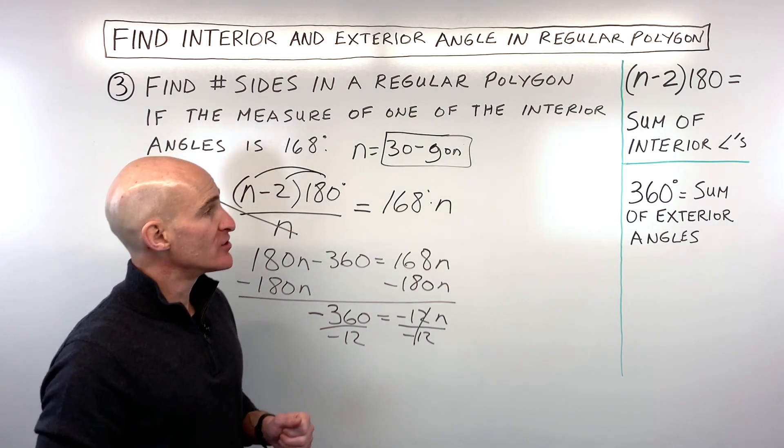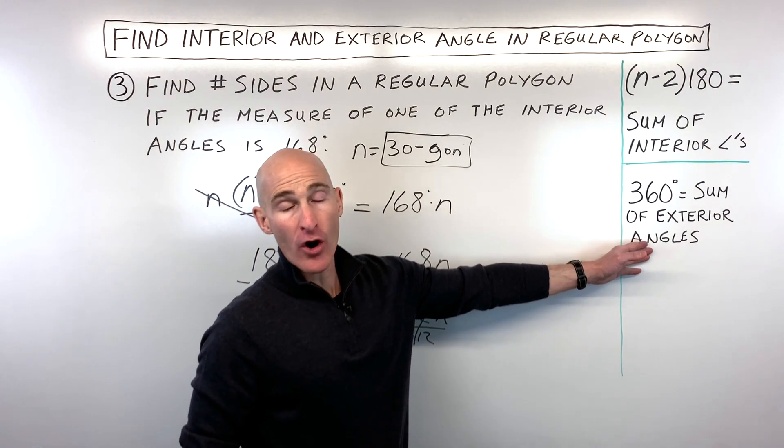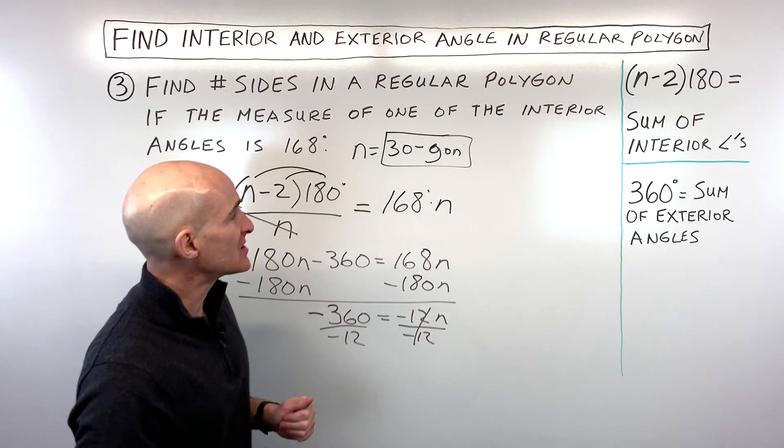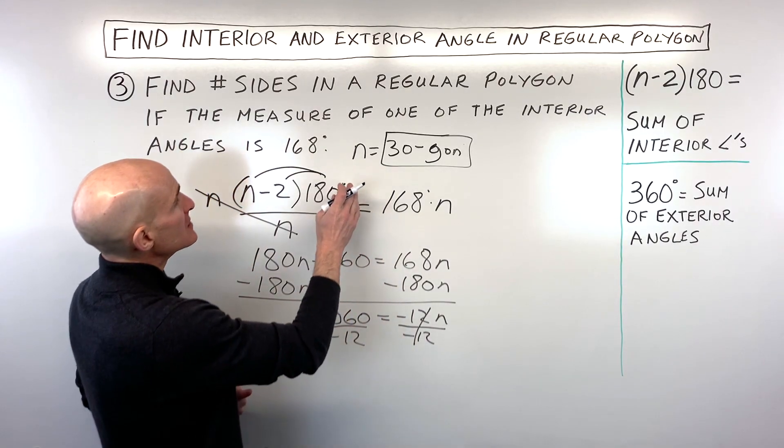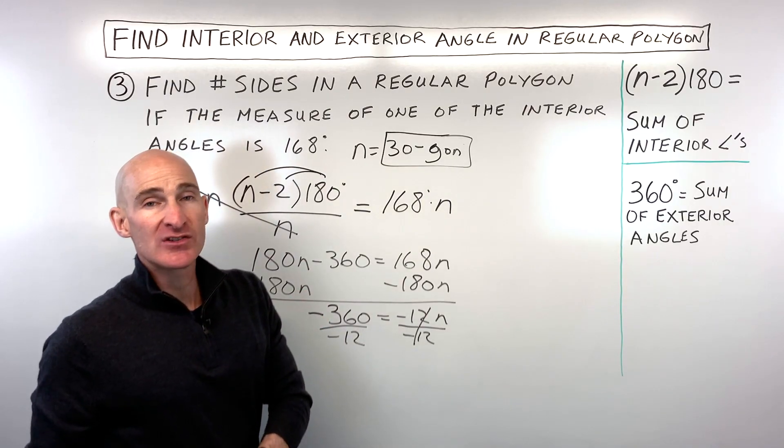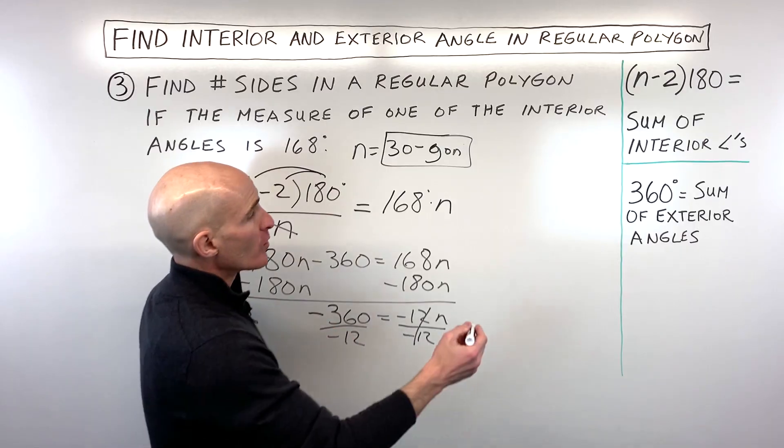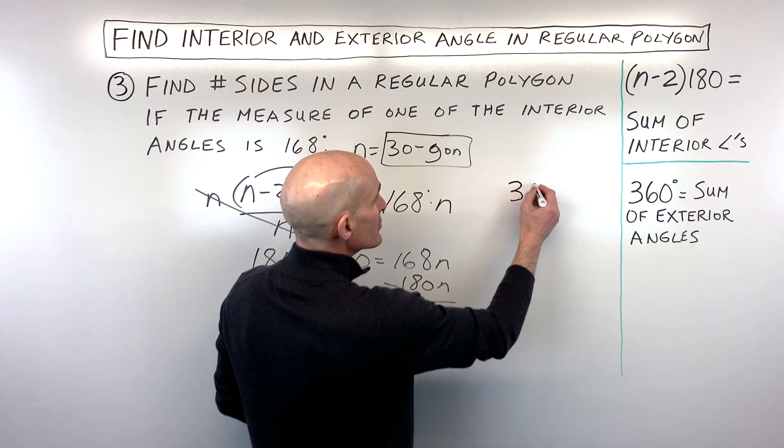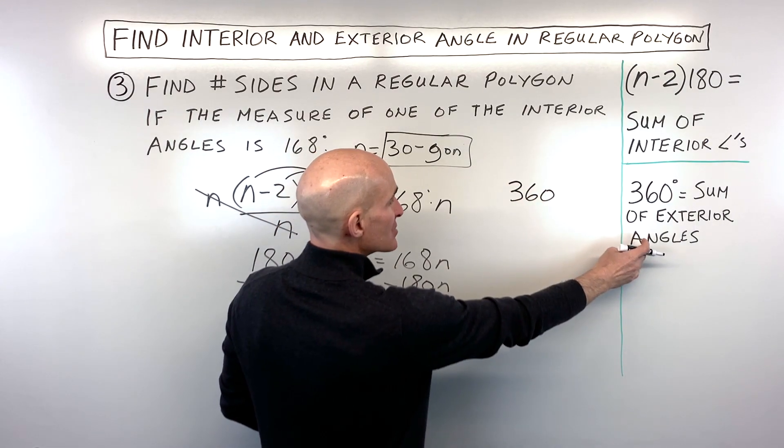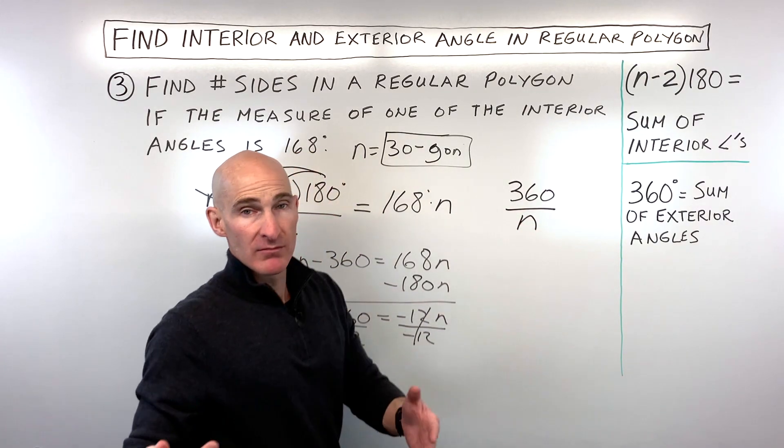So there's another shortcut method that you can do, which is to focus on this formula here, that all the exterior angles add up to 360. And so if we know the interior angle is 168, 180 minus 168 gives us the exterior angle of 12 degrees. So what we're going to do now is we're going to say 360, which is the sum of the exterior angles, divided by the number of exterior angles, which we don't know yet, equals the measure of just one of the exterior angles.